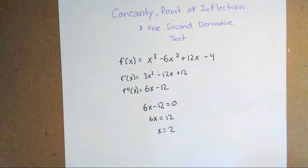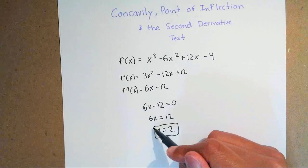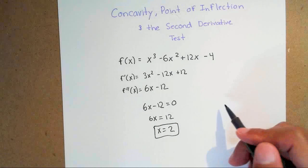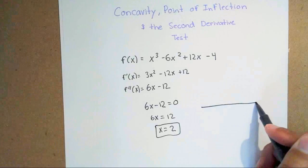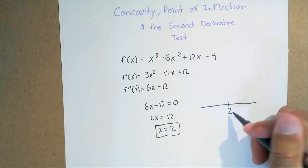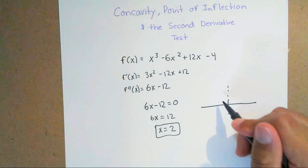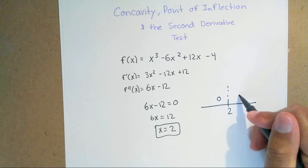That means x equals 2 is a critical number. So just like you did with your first derivative, you're going to put 2 on a number line and test values. A number left of 2 is 0, and a number greater than 2 is 3.